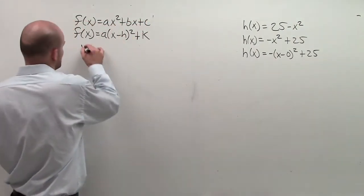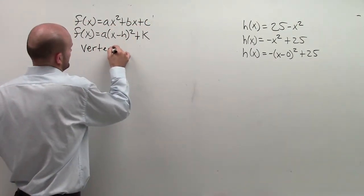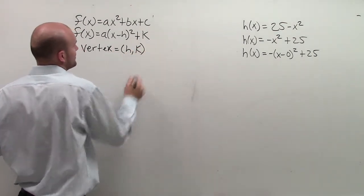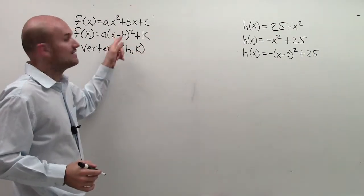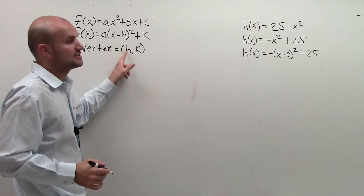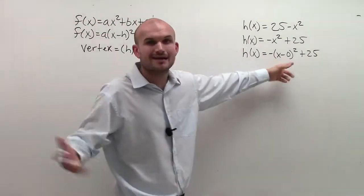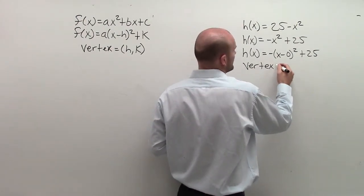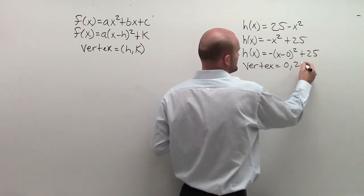So now, remember, the vertex is equal to h comma k. So it's going to be the opposite sign from what's in my equation to actually my vertex point. But here, opposite of 0 is not going to count. So you have your vertex is equal to (0, 25).